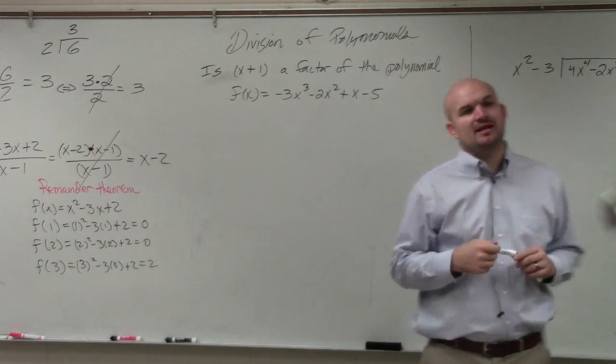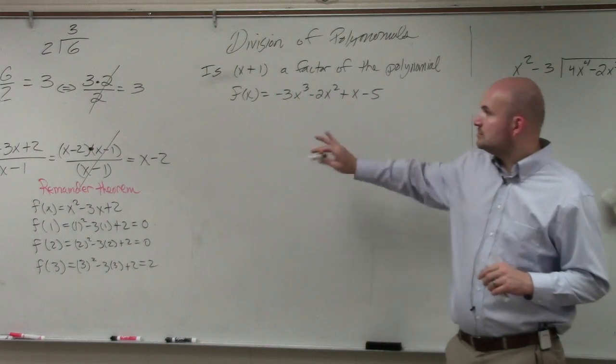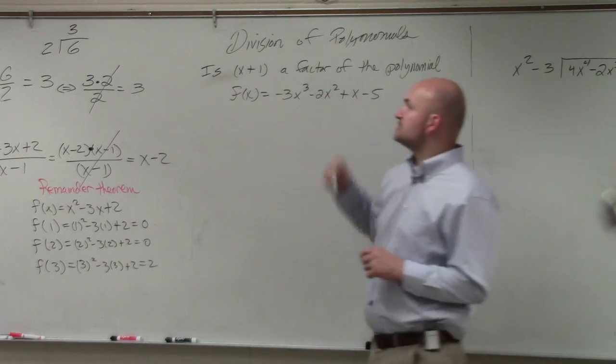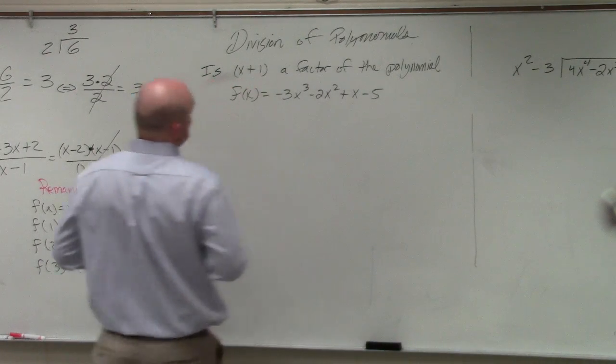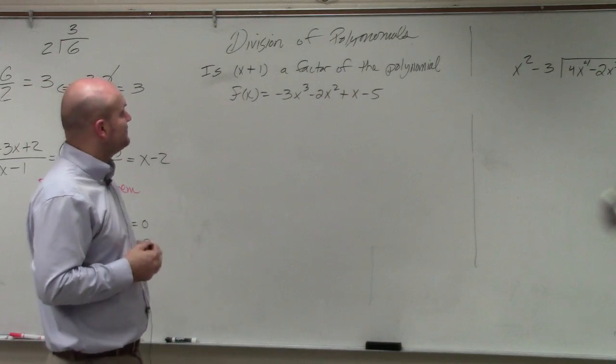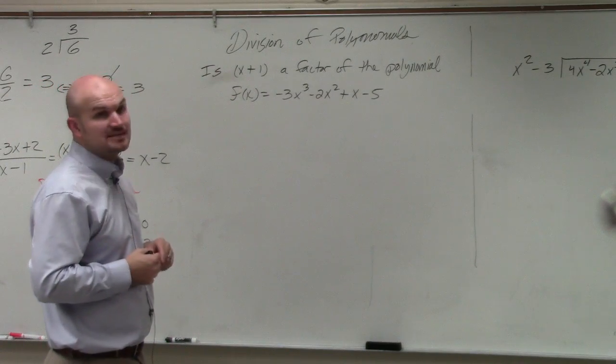It's very related to the remainder theorem, which I spent a lot of time going over here. So this one's saying is x plus 1 a factor of the polynomial f of x equals negative 3x cubed minus 2x squared plus x minus 5.